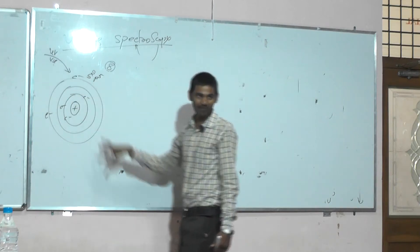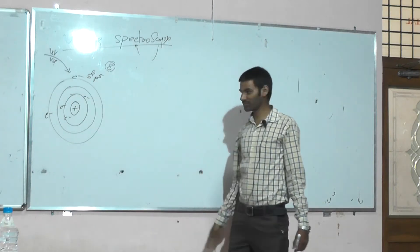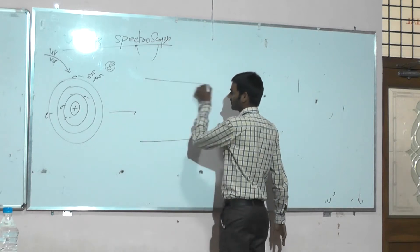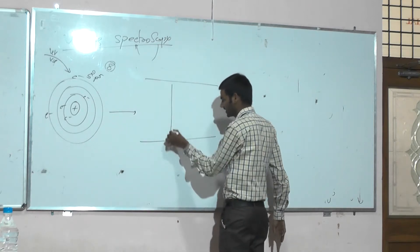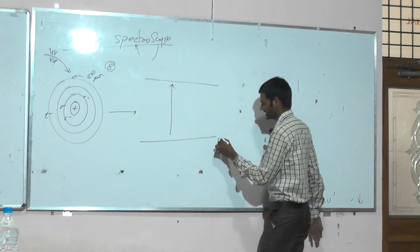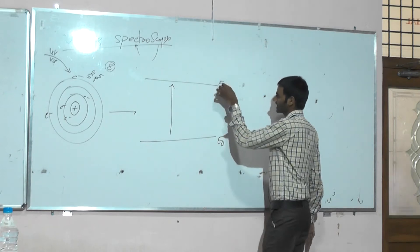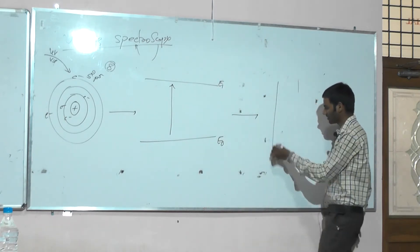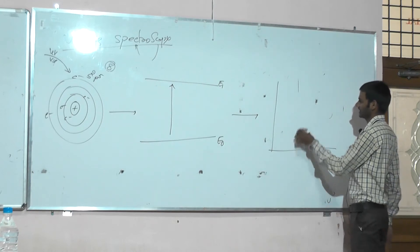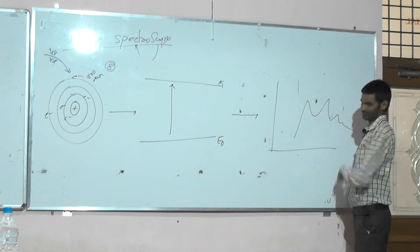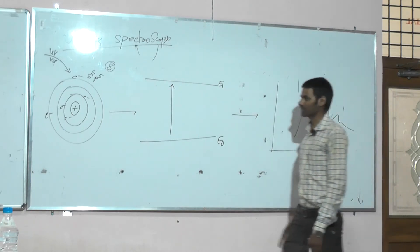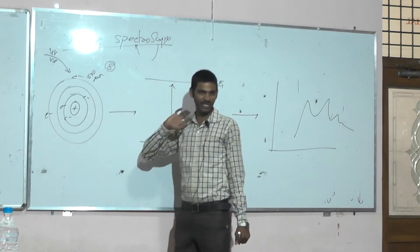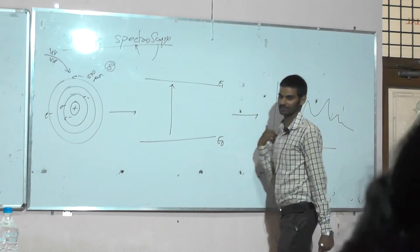The valency electron absorbs UV-visible radiation, thereby it undergoes excitation from one energy state into another energy state. After excitation, the third step is corresponding spectra — it will give some corresponding spectra. Now we will see the basic principle: how a sample can absorb the UV-visible radiation and how it will give the spectra.